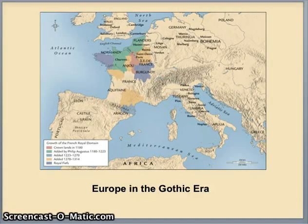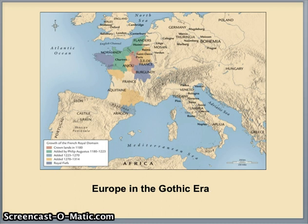This lesson is going to cover the Gothic era in Europe. Primarily we'll be talking about France, which is expanding during this time period, really beginning in about the 12th century. All the little colored sections on the map are areas that France expanded into during this period. We'll also be looking at a little bit of Italian art as well as a cathedral in the British Isles.